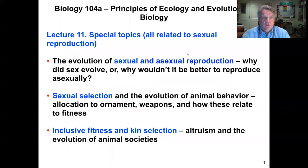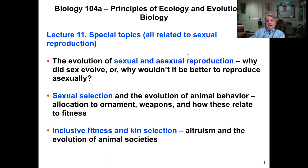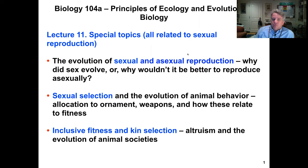Hello, Bio 104 students. In lecture three, we're going to start talking about special topics in evolutionary biology, looking at topics related to sexual reproduction. We're going to examine the evolution of sexual and asexual reproduction, the concept and examples of sexual selection, and then we'll round off the lecture looking at inclusive fitness and kin selection.